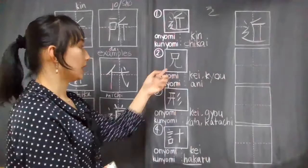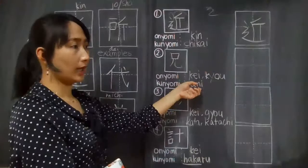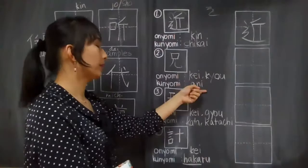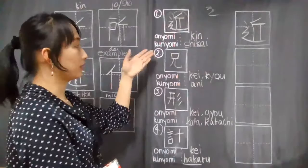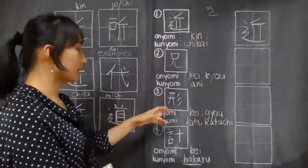This one's kunyomi is ani. Ani means older brother, and older sister is called ane. When you see this, it's somewhat related to a person or to a family member. And then this, its kunyomi is also kei. So when you see this, it's somewhat related to shape.